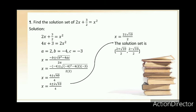Let's try a problem using the quadratic formula. Find the solution set of 2x plus 3 halves equals x squared. Since this equation is not factorable, we will use the quadratic formula. Rearranging, 2x plus 3 halves equals x squared becomes 2x squared minus 4x minus 3 equals 0.